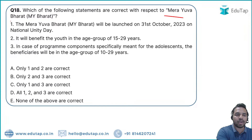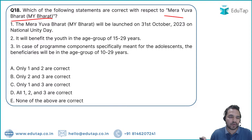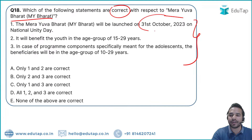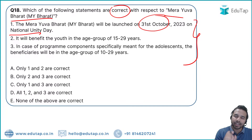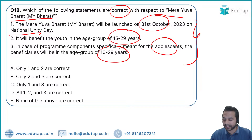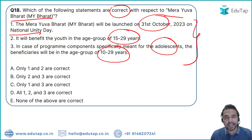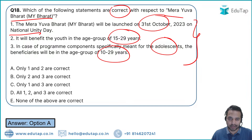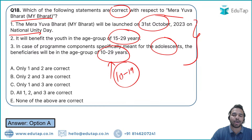Question 19: Regarding the Mera Yuva Bharat (My Bharat) program launched by the Government of India — which statements are correct? Statement 1: It will be launched on 31st October, National Unity Day. Statement 2: It will benefit youth in the age group of 15–29 years. Statement 3 incorrectly states the age group for the adolescence component as 10–29 years — it is actually 10–19 years. Only Statements 1 and 2 are correct — Option A.